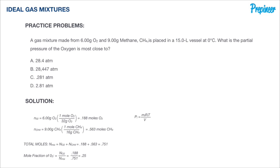The universal gas constant for the units we are using in this problem is 0.08206, as referenced in your handbook. The moles for oxygen is 0.188, and we're given the temperature in Celsius — we have to convert that to Kelvin.